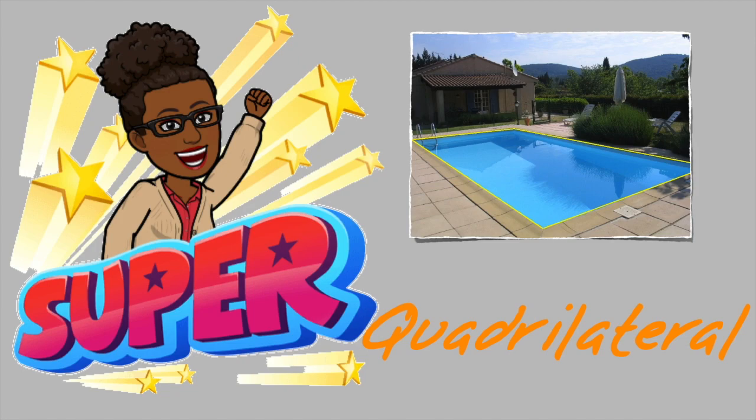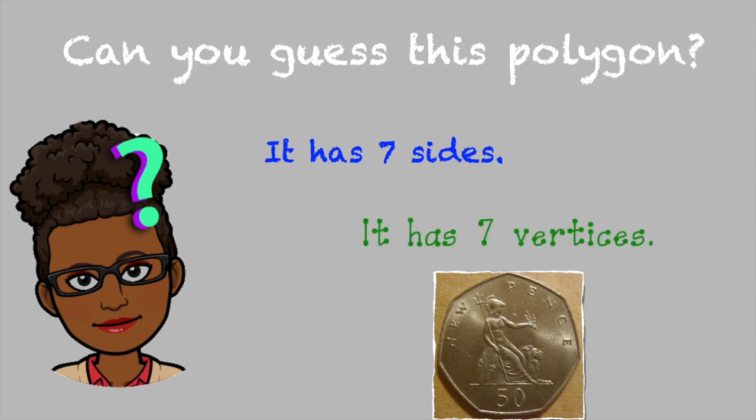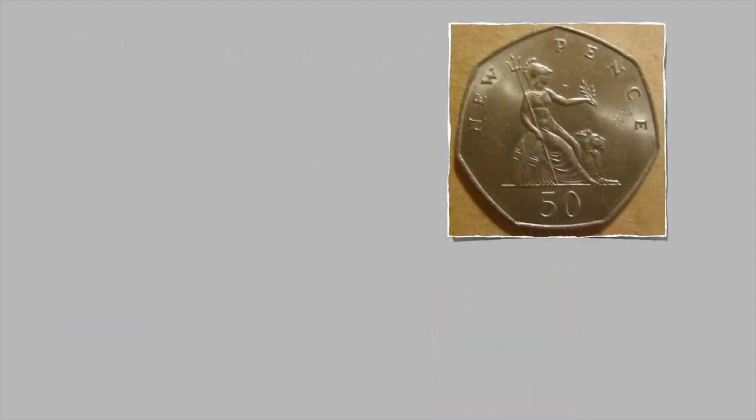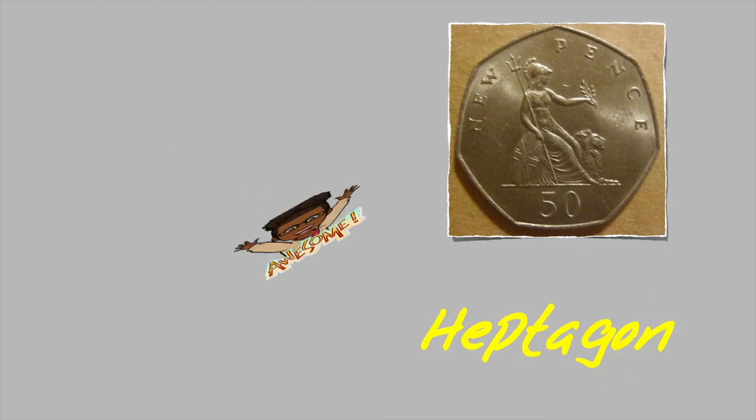Here's another one. Can you guess this polygon? Money, money, money, money. It has seven sides and seven vertices. Well, if you said heptagon, awesome.